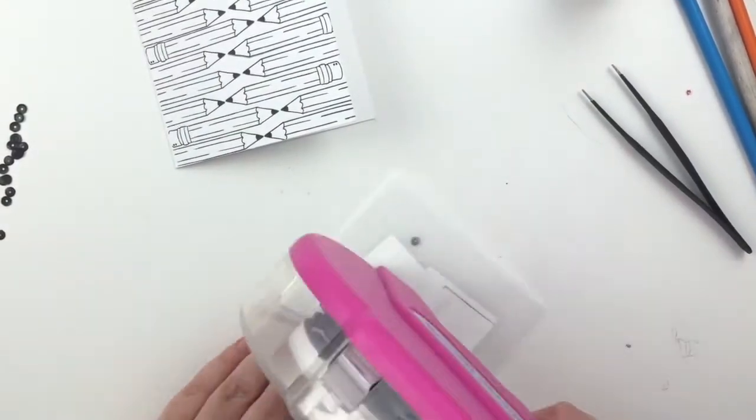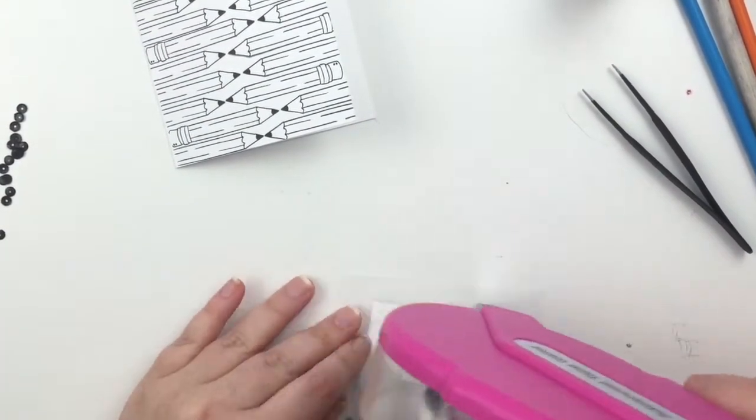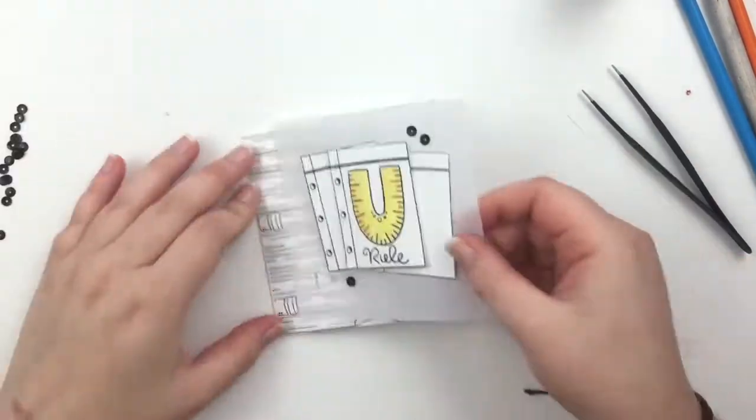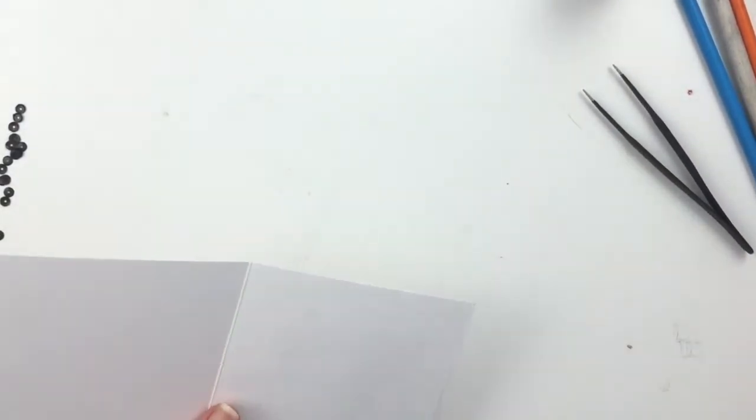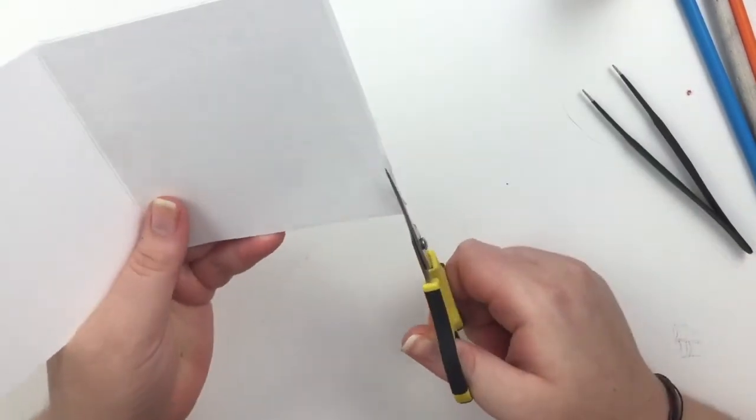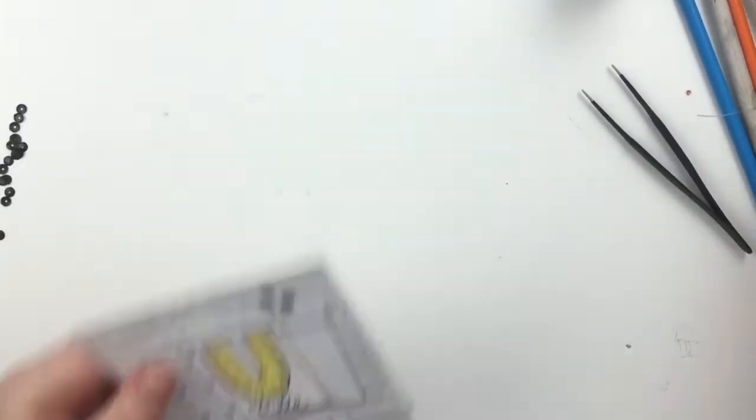After that I just taped down the piece of vellum behind the little pieces of paper. And then I just had to cut off a little bit of extra vellum. And that's the card.